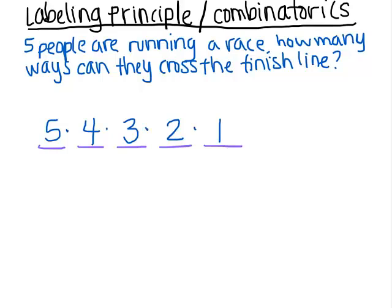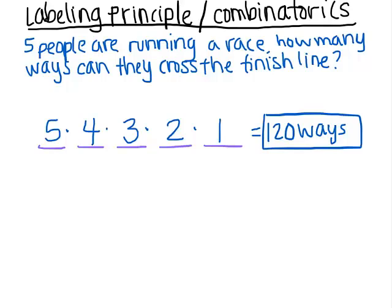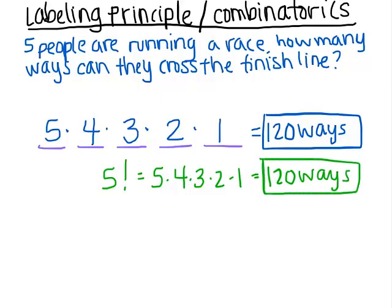So what I do with all these numbers is multiply them together. This means that I have 120 ways for those five people to cross the finish line — 120 orderings. Thinking back to the previous video, you should recognize that this is the same as five factorial. The definition of factorial in this case is five times four times three times two times one, which is 120 ways. So if you've got a total number of people and you're trying to put all of them in order, that's just using factorial — five factorial.